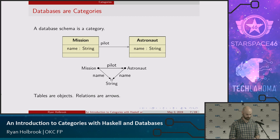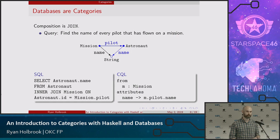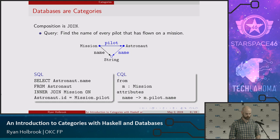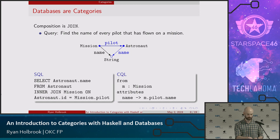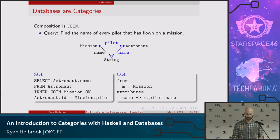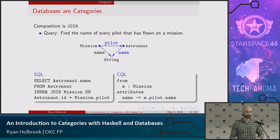So tables are objects and relations are arrows. Inside our category, the composition operator is join. If we want to develop a query — say, what's the name of every pilot that's flown on some mission — you just follow the arrows. Start at the mission object, follow the pilot arrow to get to the astronaut, then pull out its attribute by following the name arrow down. Instead of thinking about joining tables, you're just following paths along the category. I think this is really nice — much, much easier.